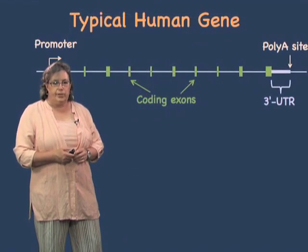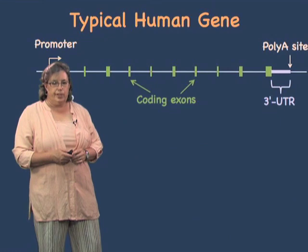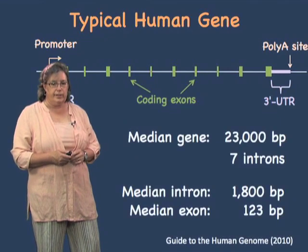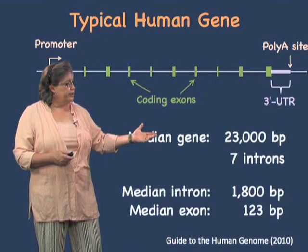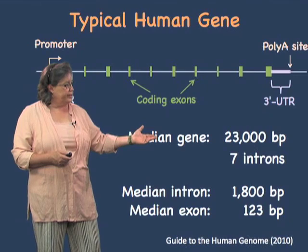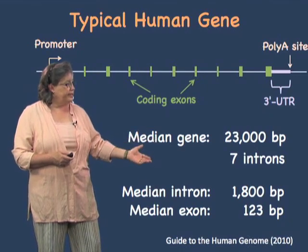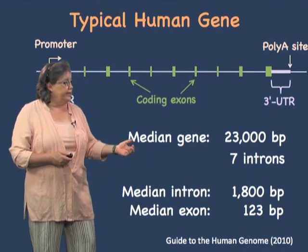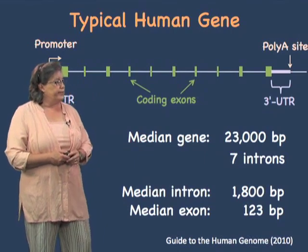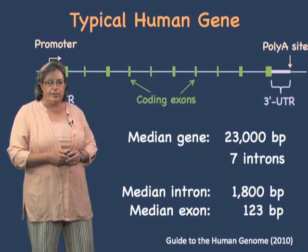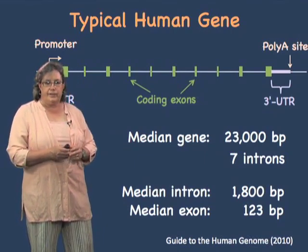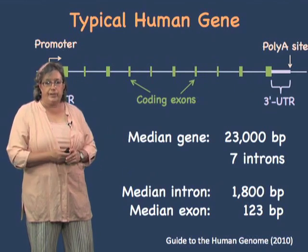This shows the structure of a typical human gene. The typical human gene has 23,000 base pairs and 7 introns. I'm using a median here, because if I use the average, it would be very much thrown off by some of the very large genes that we're going to talk about in a little bit.